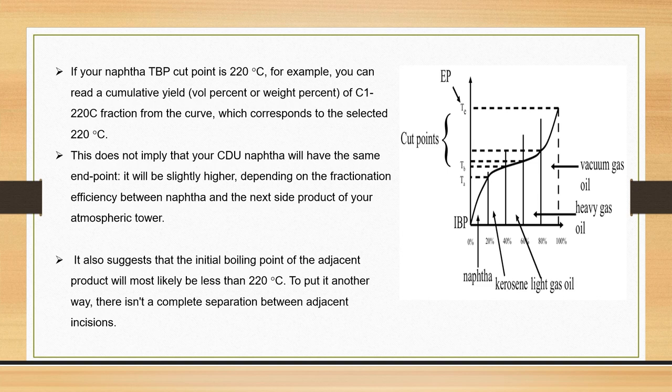In the graph we can also see that the TBP curve is plotted and cut points are present for different petroleum products — that is, naphtha, kerosene, light gas oil, vacuum gas oil, and heavy gas oil. TA and TB denote the limitations of the boiling points, indicating the separation limits.